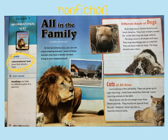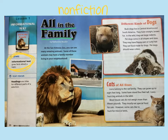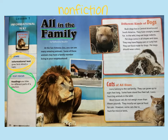The title of this informational text is All in the Family, and it's written by Catherine McKinn. At the San Antonio Zoo, you can see many amazing animals. Some of these animals may have a family member living in your neighborhood. You may notice there are four different little squares or rectangles with information, and each of those has what's called a heading. Headings are titles for different parts of a section, telling us what those rectangles are going to be about.